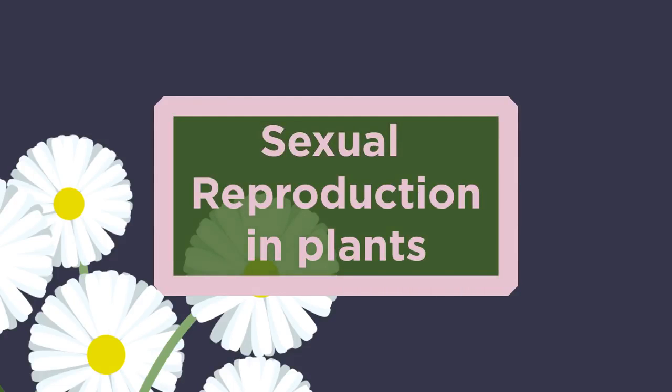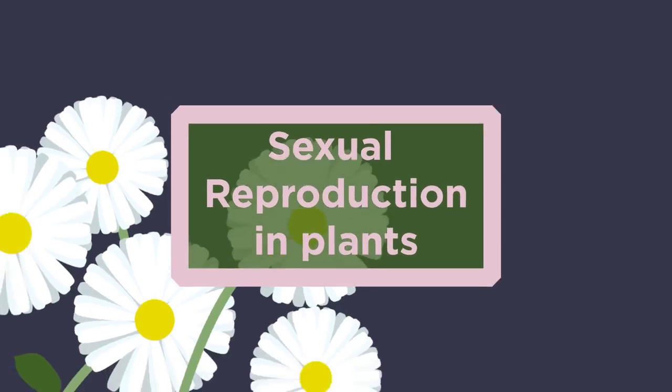In plants, sexual reproduction is carried out in the flowers. The flowers contain the sexual organs. Let's start with labeling the different parts of the flower.